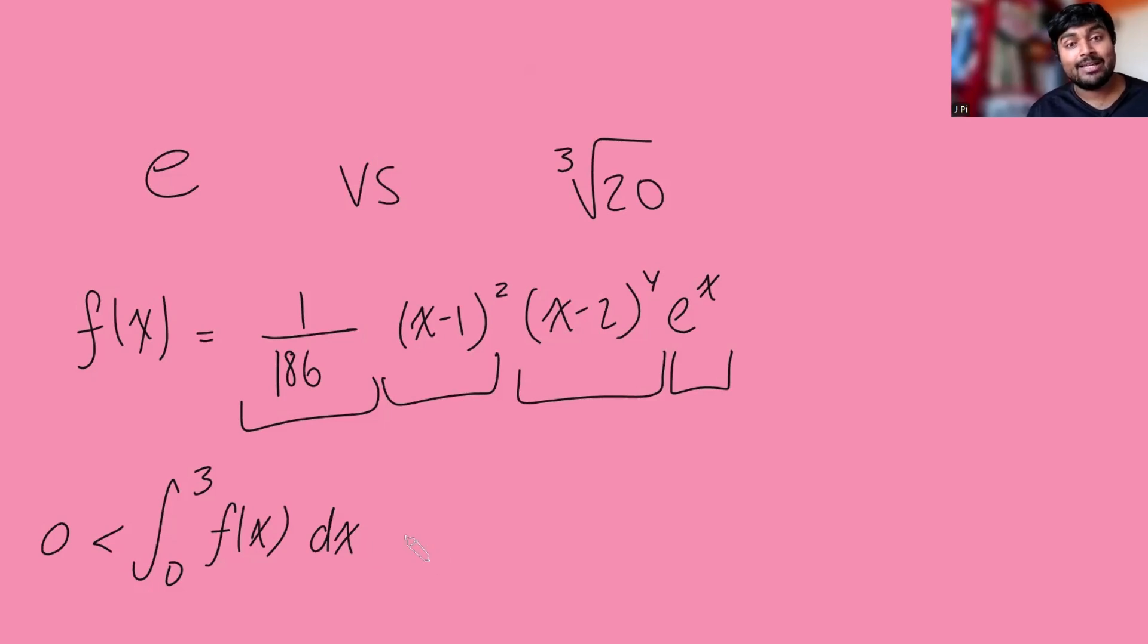And what is this integral here? Well, I'm not going to go through the details. It's not super exciting. Essentially, you just expand all this out, this polynomial part, and you just need to work out what this integral here is for n equals 0, 1, 2, 3, and 4, and this you can just do by parts. I actually just plug this into ChatGPT.